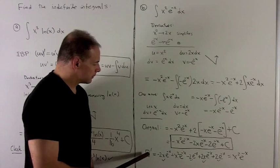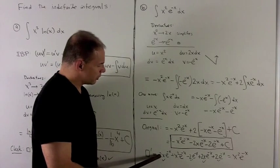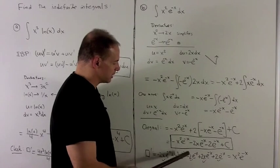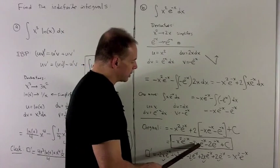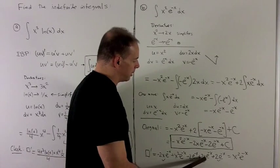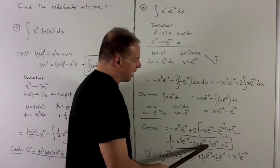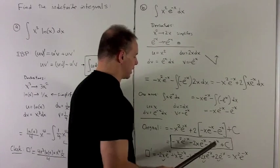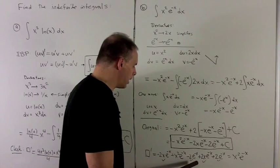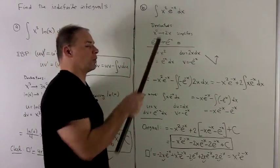Checking the answer by taking the derivative: from the first term, the product rule gives minus 2x e to the minus x plus x squared e to the minus x. The second term gives minus 2 e to the minus x plus 2x e to the minus x. The last term gives plus 2 e to the minus x. The 2x e to the minus x terms cancel, the 2 e to the minus x terms cancel, leaving x squared e to the minus x — which matches the original integrand.